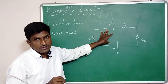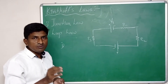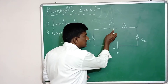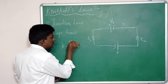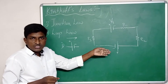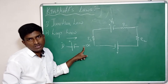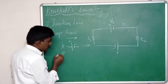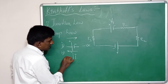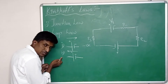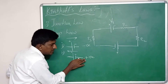When calculating potential differences we must follow the sign convention. The first sign convention: the potential difference or EMF is taken as negative when you move from the positive terminal to the negative terminal in a battery. If you move from the negative terminal to the positive terminal, the EMF is taken as positive.